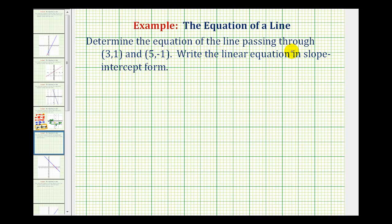We're going to determine the equation of the line passing through the points (3,1) and (5,-1).